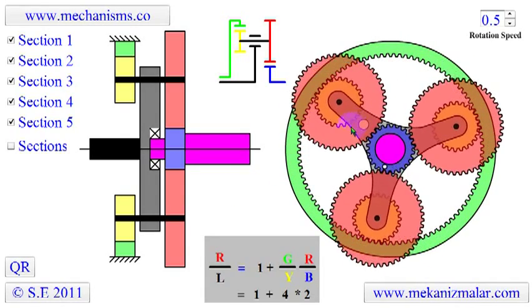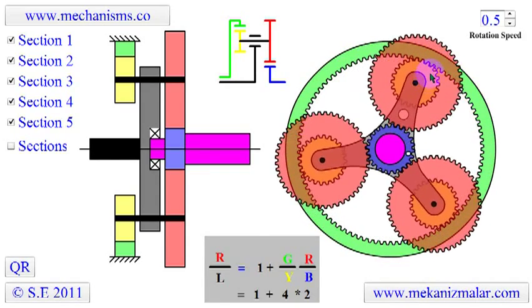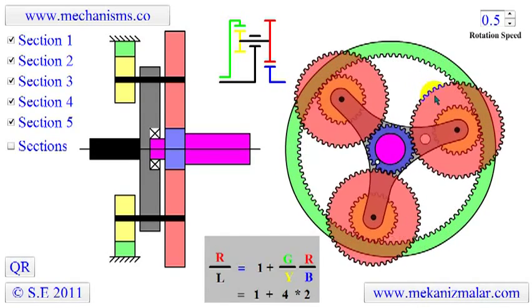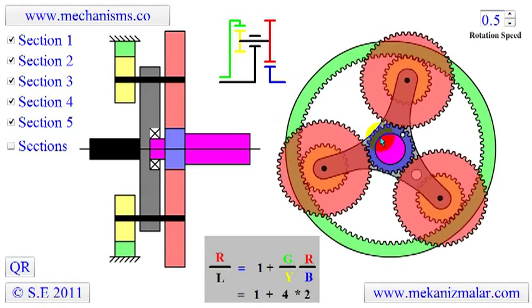The number of teeth on the green annulus gear is 96. On the yellow planetary gear, it is 24. On the planetary gears, it is 48. And on the blue sun gear, it is 24.